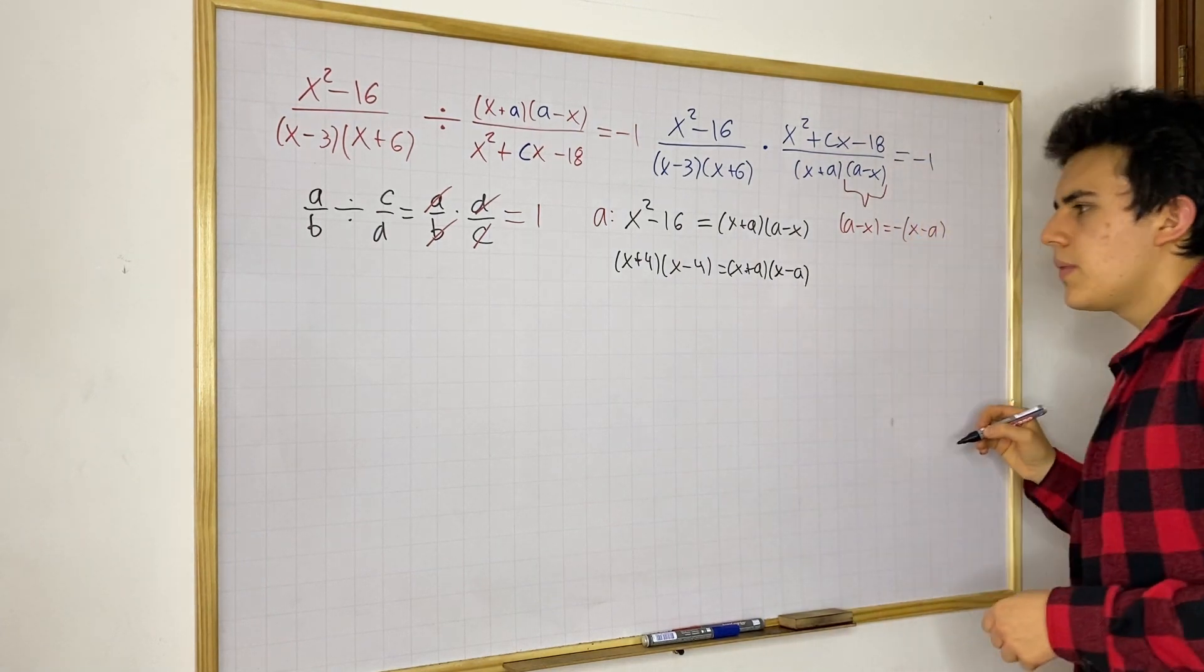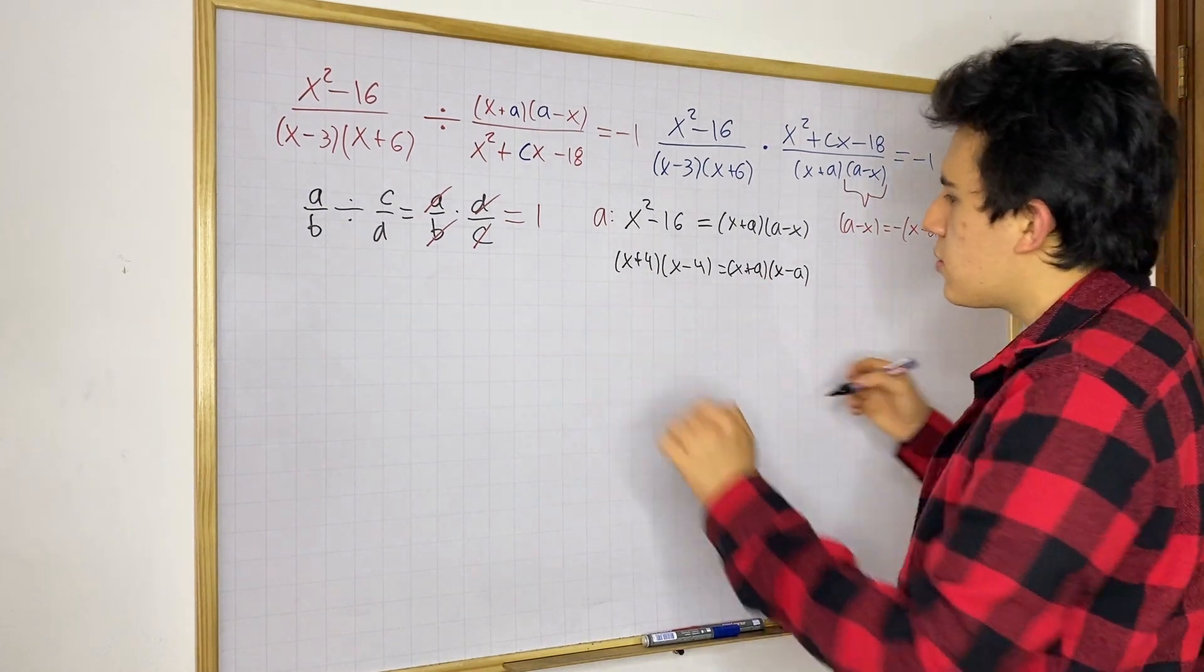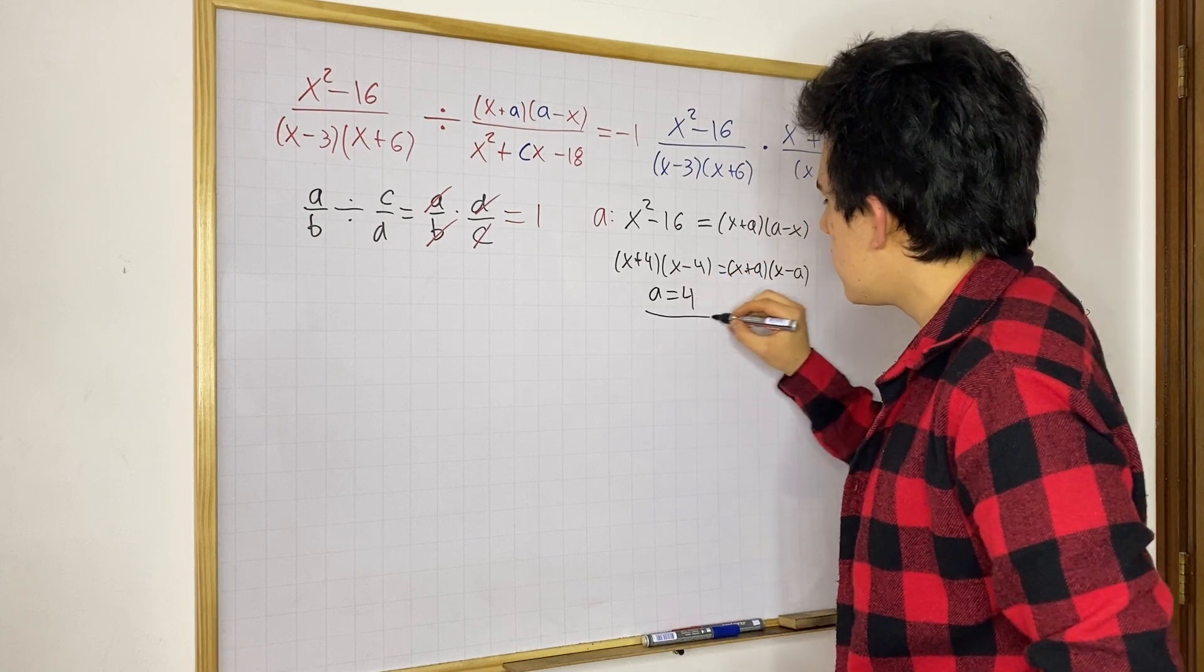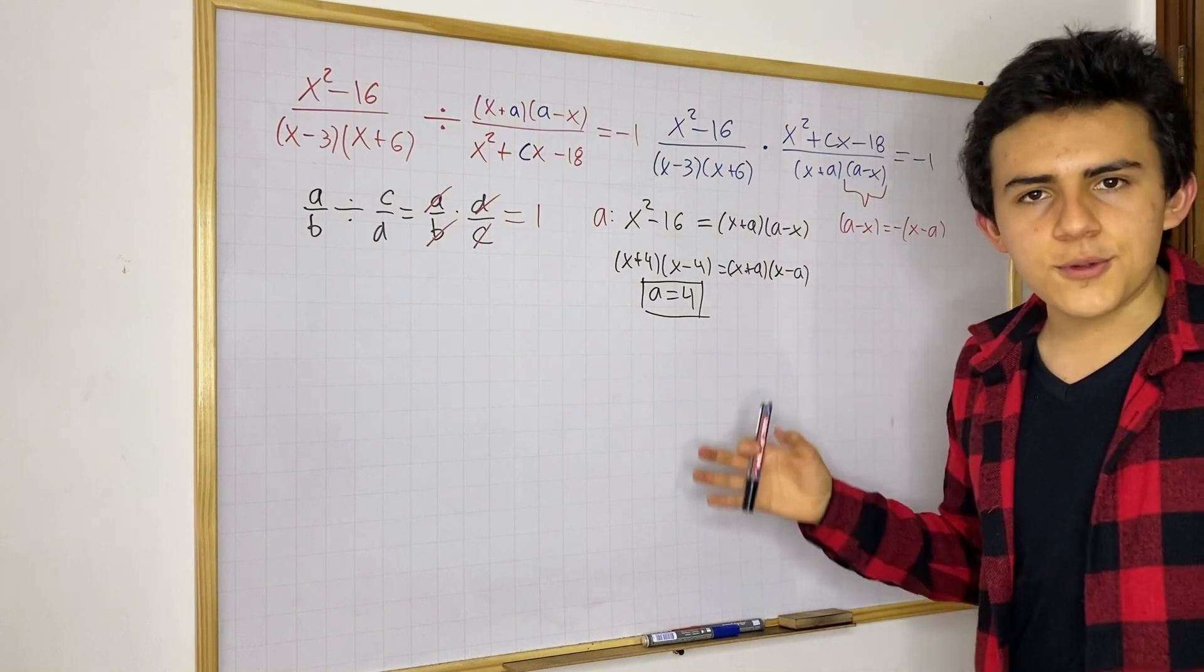X minus A. And this is your difference of squares. Now, you can clearly see that A is equal to four. A is equal to four. This is one of the answers that we're looking for.